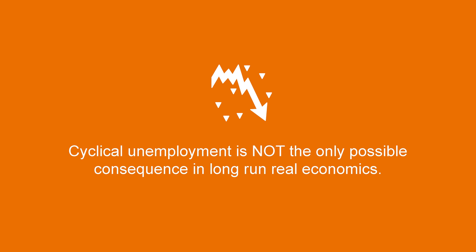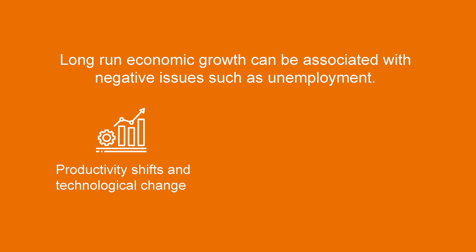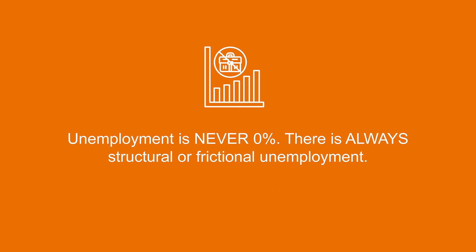When speaking of long run real economics, we may think that cyclical unemployment is the only possible consequence. However, other types of unemployment may occur even when the economy is growing. Long run economic growth can be associated with unemployment: productivity shifts and changes in the production structure, although associated with growth, can lead to structural or frictional unemployment. The same happens when technology advances — some people may get left out of this progress. Binding all these causes together, we arrive at one conclusion: the unemployment rate is never zero. There are always people changing between jobs or being laid off because of structural or seasonal changes.